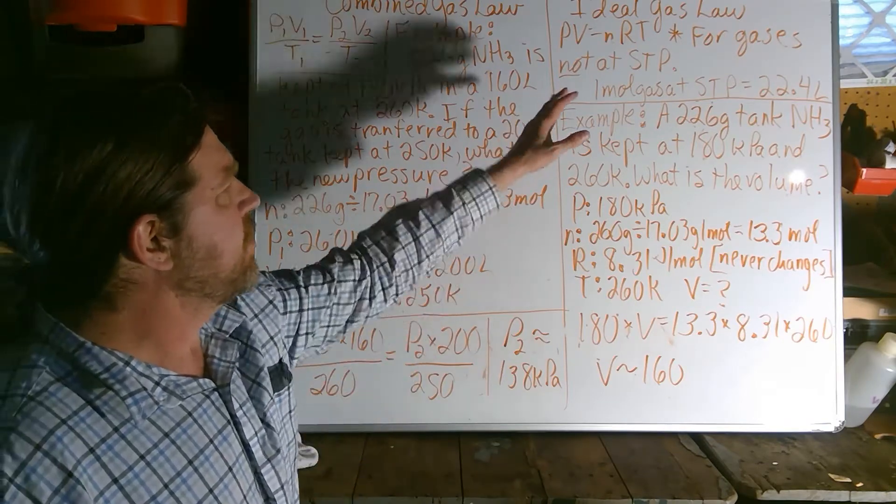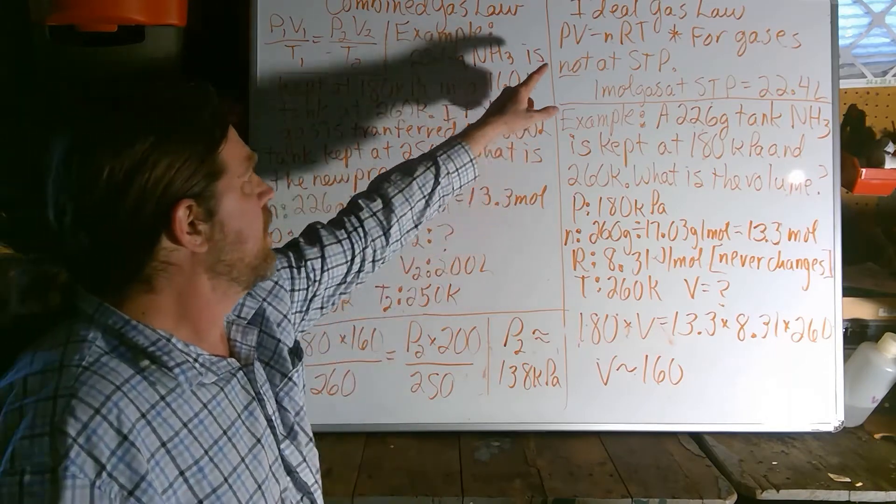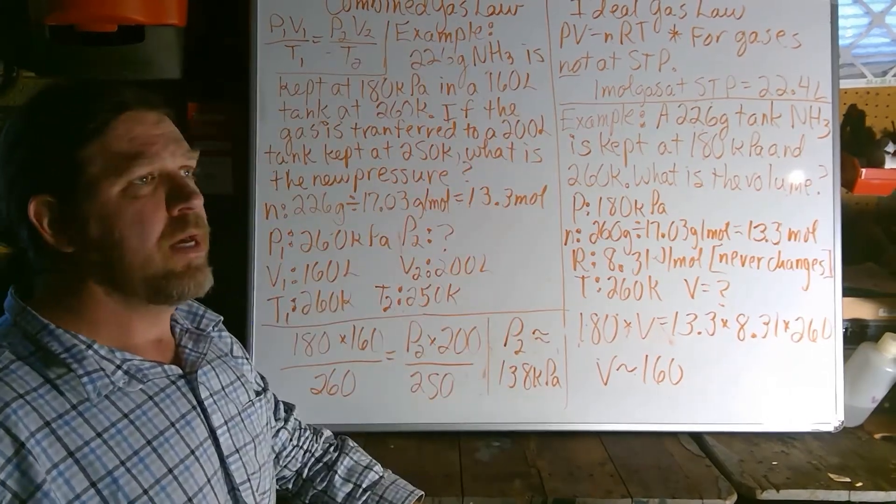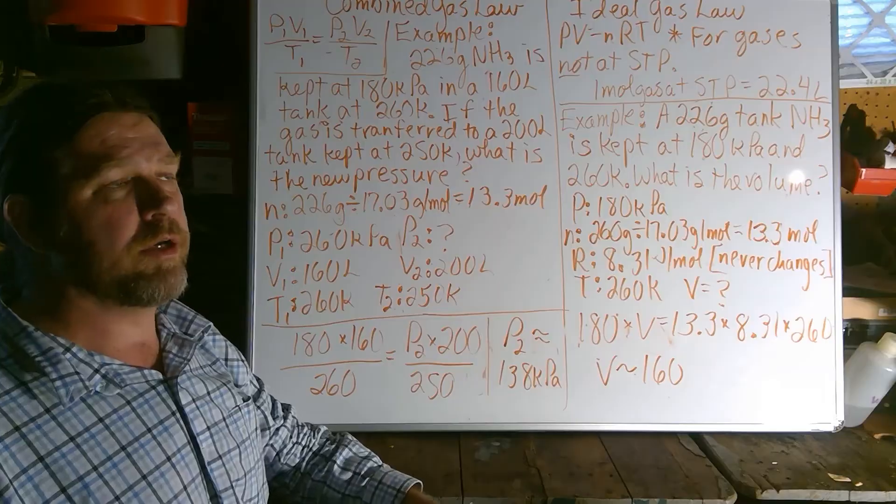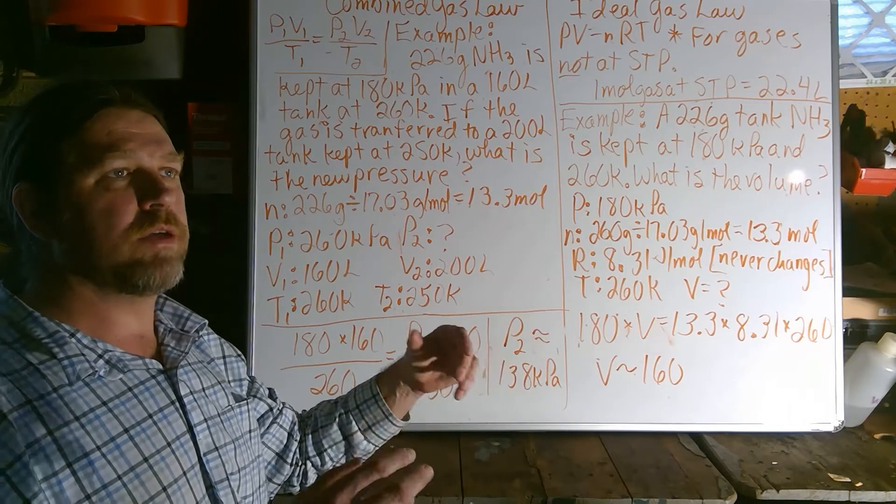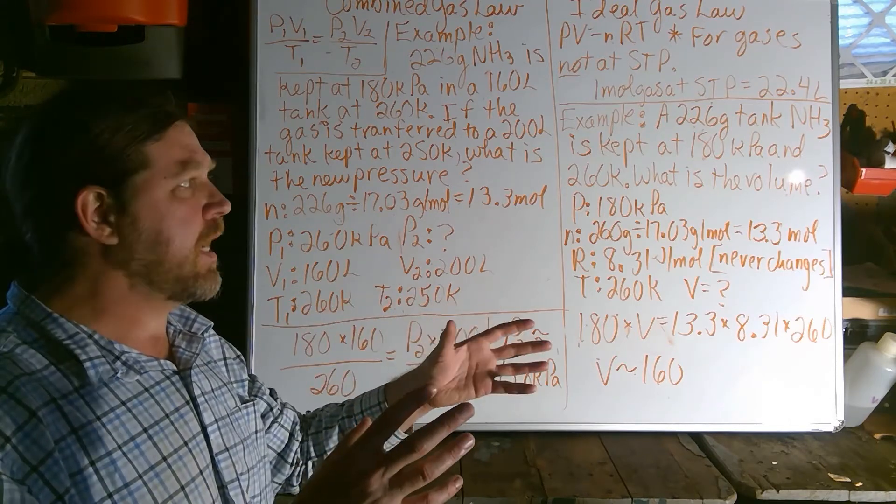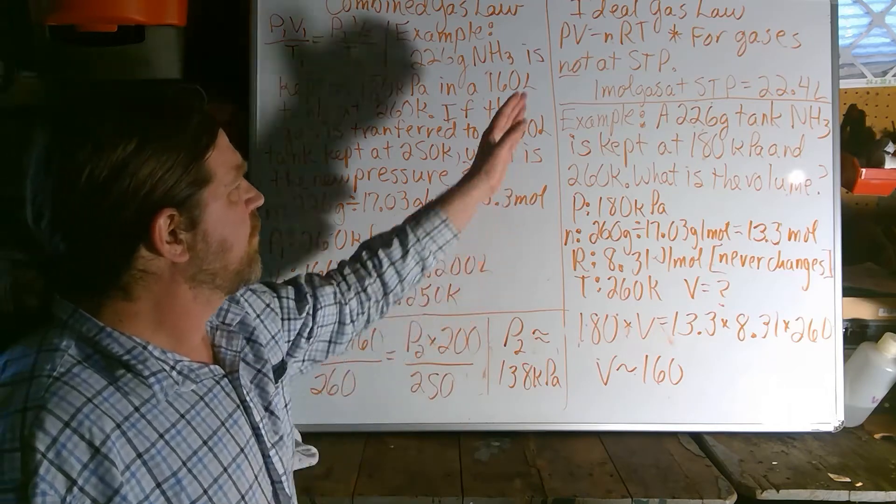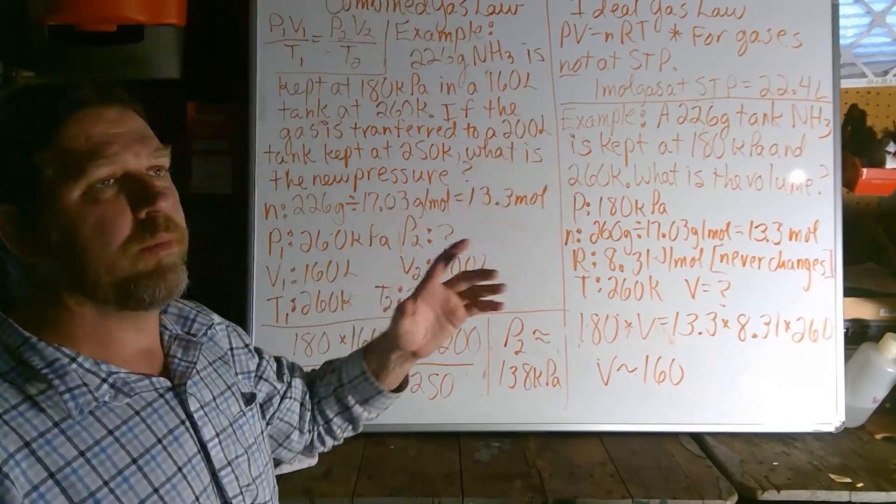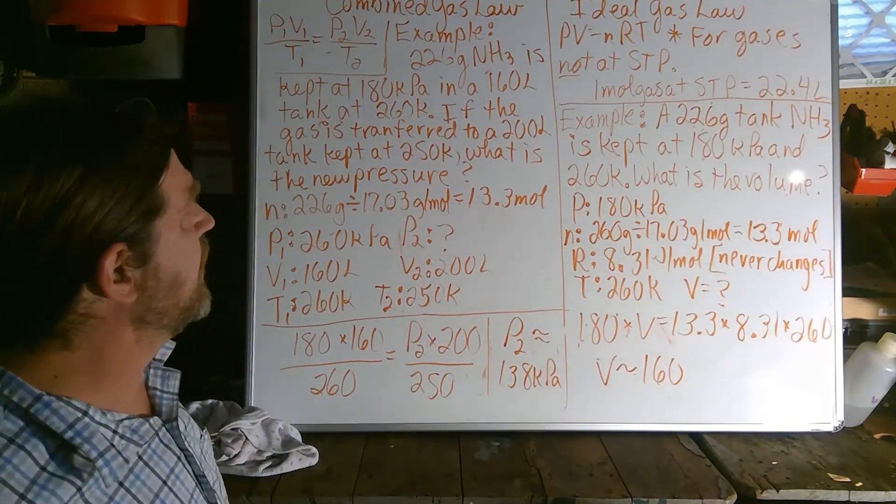On the other hand, ideal gas law, at least in its kind of home base form, is PV=nRT. And notice there's no ones and twos here. In its standard form, we're not looking at change. We're just analyzing the dynamics of the container of the gas from the terms of pressure, volume, and temperature, but also in moles, which is denoted by the letter N rather than M.